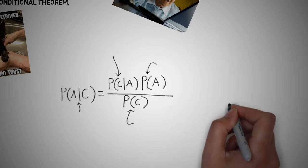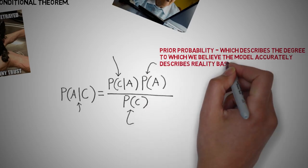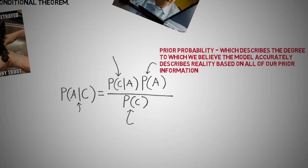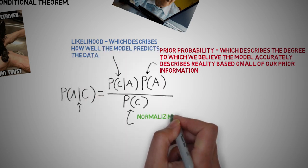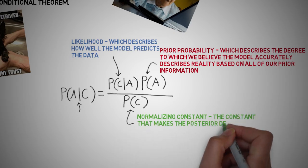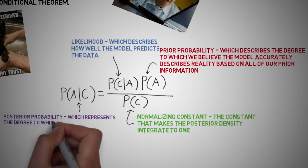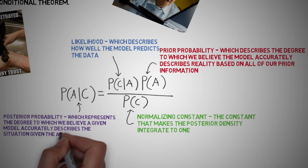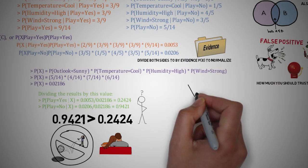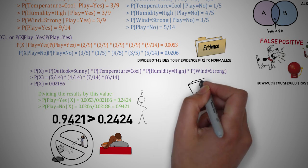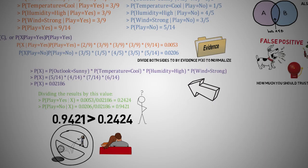Let's take a deeper look at the formula. We can start with the prior probability, which describes the degree to which we believe the model accurately describes reality based on all prior information — so how probable was our hypothesis before observing the evidence? Then we have the likelihood, which describes how well the model predicts the data. The normalizing constant makes the posterior density integrate to 1. And finally, the output we want is the posterior probability, which represents the degree to which we believe a given model accurately describes the situation given the available data and all prior information — so how probable is our hypothesis given the observed evidence?